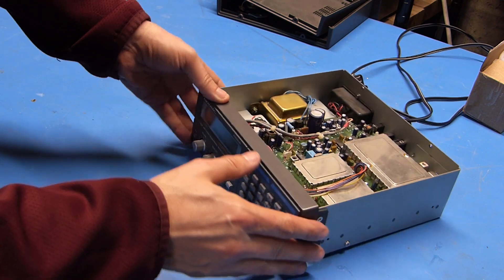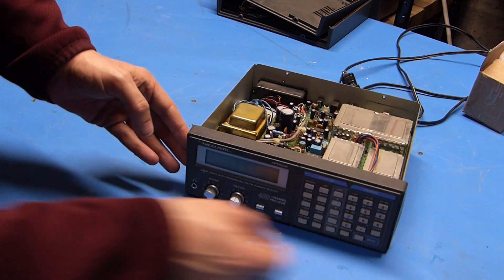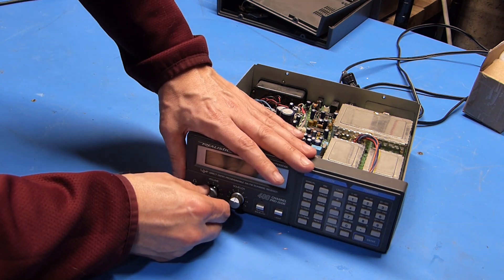So the next thing I'm going to need to do is pull the faceplate off and it looks like there's two screws on either side here but before I take those off I'm going to pull these knobs off.